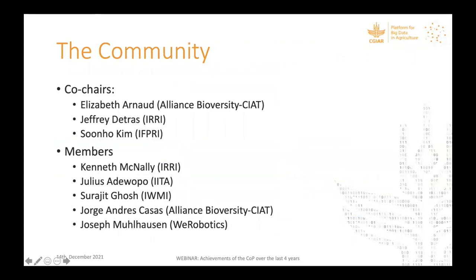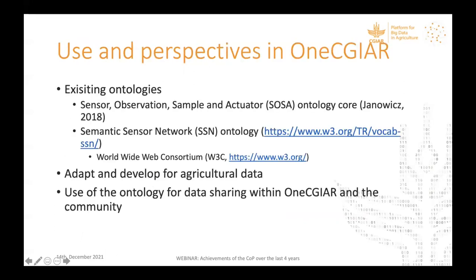The CGIAR ontology working group has been helpful in defining standards for agricultural data. Last July, the group had a kickoff meeting with representatives from CGIAR centers and WeRobotics. Currently, there are defined standards like the Sensor Observation, Sample and Actuator (SOSA) ontology core and the Semantic Sensor Network ontology, defined by the World Wide Web Consortium as modular ontologies adaptable for specific uses such as agricultural data. With this as a backbone, the working group hopes to develop a UAV ontology useful for data sharing within One CGIAR and beyond.